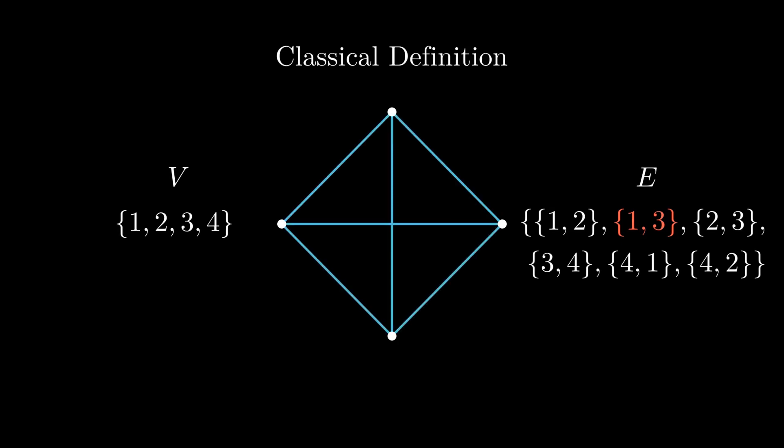The problem I have with this definition is that it restricts many types of graphs that we would want to make. As an example, what if I want two vertices to be connected by more than one edge? After all, couldn't it be possible for two vertices to be related in more than one way? Using the definition we just made,